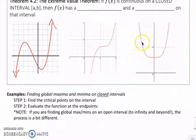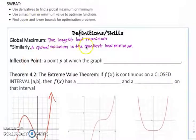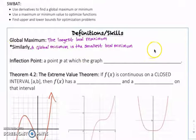Same thing over here with this function — we have a global minimum, because that's the lowest point on the graph, but no global maximum because it keeps going off to infinity. So oftentimes if we're interested in a global max and min, we're actually looking on an interval. By definition, there's an actual mathematical definition, but generally speaking in layman's terms, the global maximum is the largest local max, and similarly the global min is the smallest local minimum.